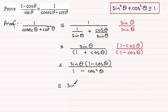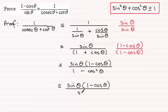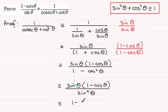So we have sine theta times (1 minus cosine theta) on the top, and sine squared theta on the bottom. We can cancel the common factor of sine theta — one sine from the top with one sine from the bottom — and that leaves us with the result we want: 1 minus cosine theta all divided by sine theta.